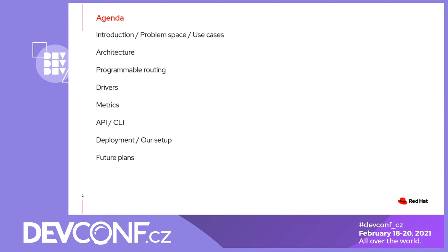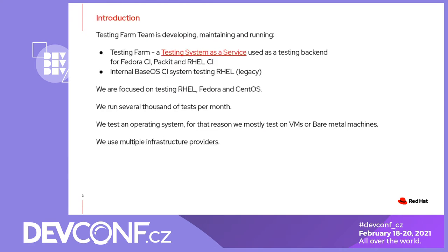Some important facts from the start: we are focused on testing the operating system — specifically RHEL, Fedora, and CentOS. We run several thousands of tests per month in our services. We use multiple infrastructure providers where we provision mostly VMs or bare metal machines, because when you are testing an operating system, container tests are usually not enough for most cases. For functional tests, we need VMs or bare metal machines.